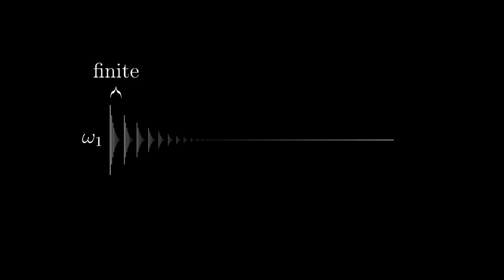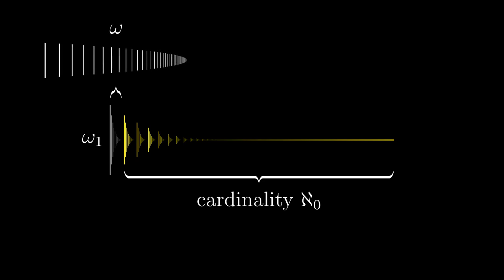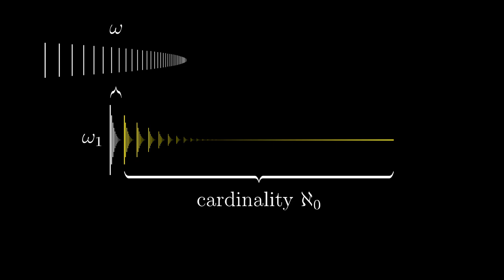Omega 1 consists of all the countable ordinal numbers — the finite ordinal numbers and then ordinals of size aleph 0, which are already captured in a single set. So the last remaining step is to add the finite ordinal numbers, the natural numbers, simply by taking a union with omega.